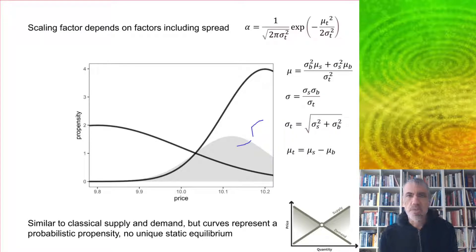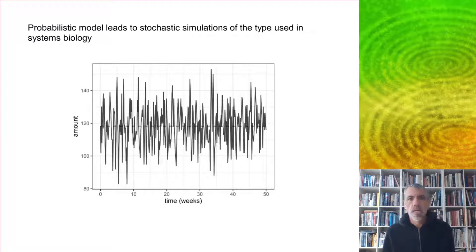This diagram is in some ways similar to the classical supply and demand thing where you have this X shape. But in other ways, it's quite different. The curves are now representing a probabilistic propensity. There's no unique static equilibrium, there's no assumption that the market will clear, and so on. And it leads to different kinds of simulations.